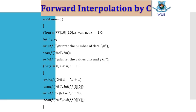Now, you can see that a two-dimensional float variable is declared here, along with some other variables: x, y, h, and u. You already know the significance of x, y, h, and u. At first, you have to input how many values you actually want to take — that is n. Then take the other two values, the value of x and the value of y, and you have to input these into a two-dimensional array so that you can calculate easily.